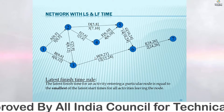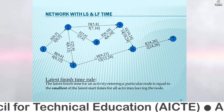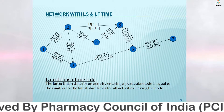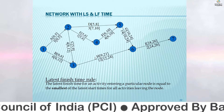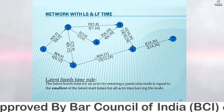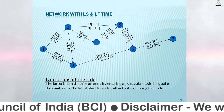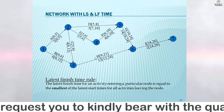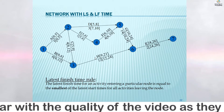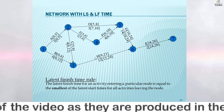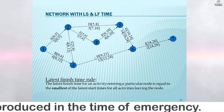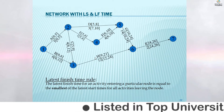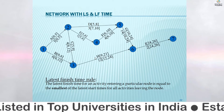To calculate the critical path, identify all possible paths from node 1 to node 7. Path 1: 1-2-5-6-7. Path 2: 1-2-4-5-6-7. Path 3: 1-2-3-6-7. Path 4: 1-3-6-7. The longest path — requiring the most days to complete the project without any interruption — is known as the critical path.